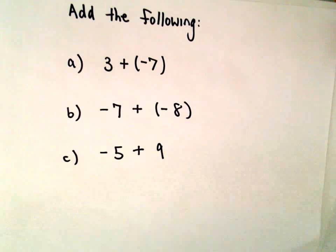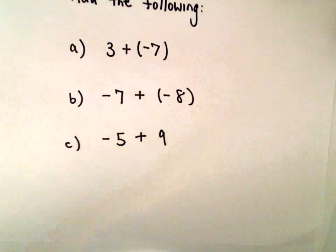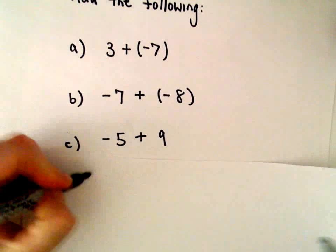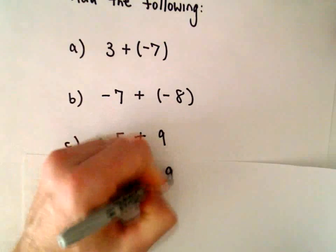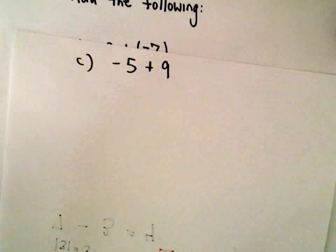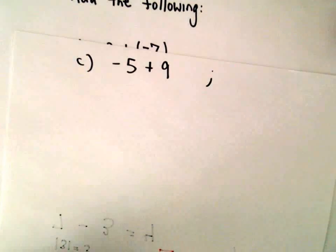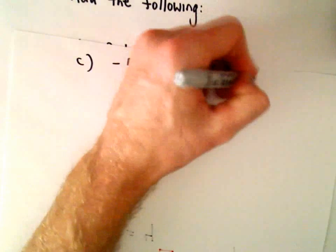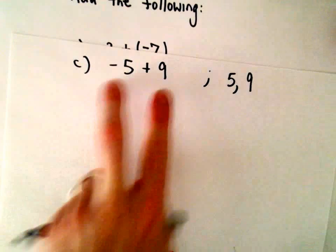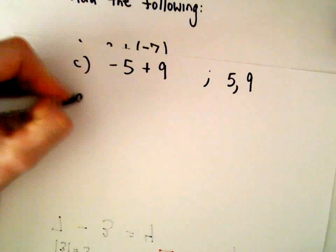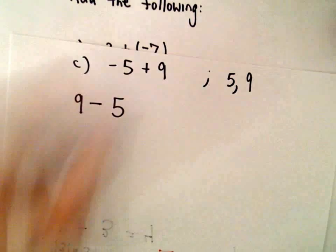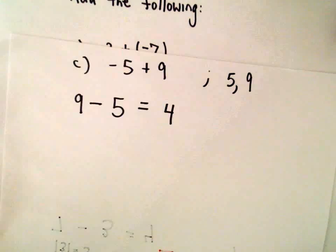Let's even look at part C here real quick, and we'll come back to part B. So we've got negative 5 plus 9, just to do the exact same thing. If I look at them in absolute value, I've got 5 and I've got 9. Again, they're opposite signs. I'm going to do the larger minus the smaller, which is going to give us positive 4.